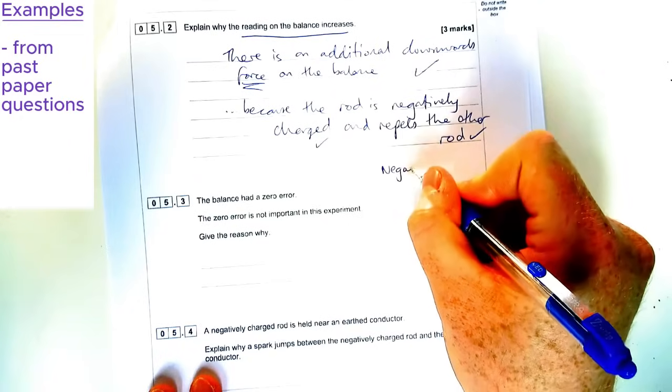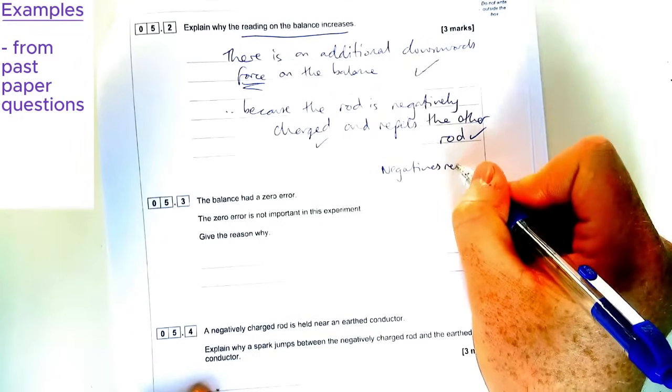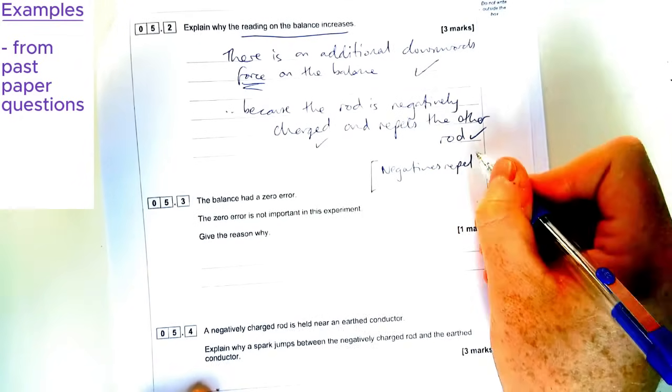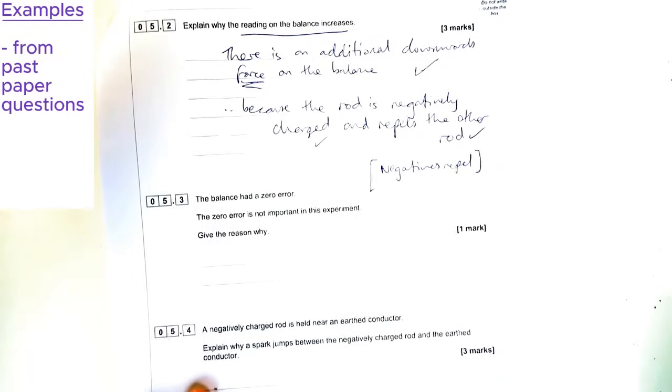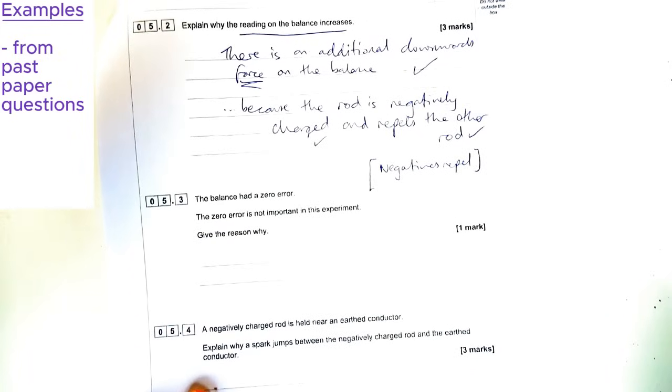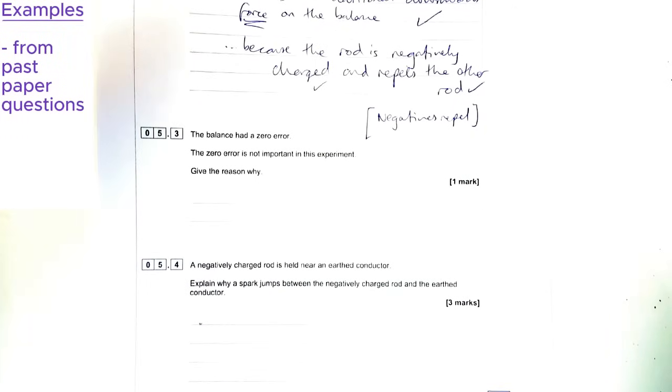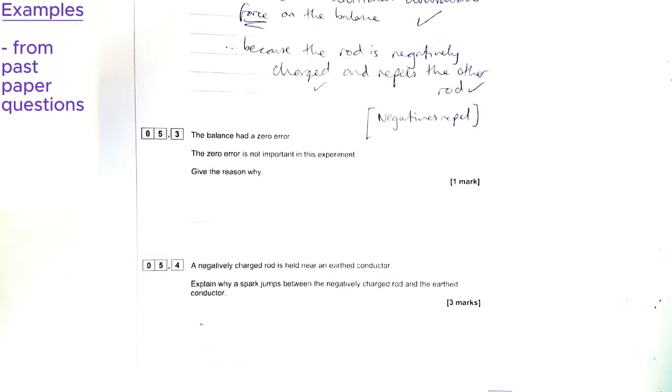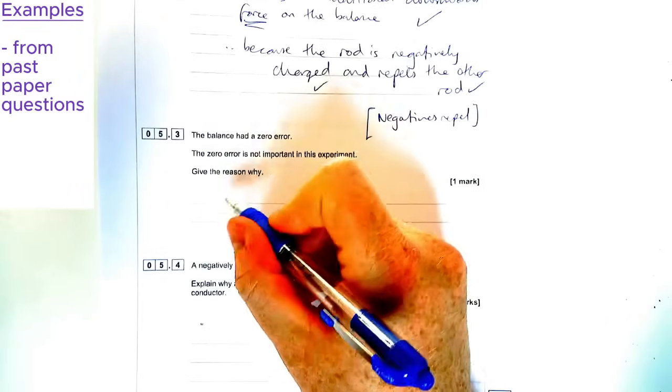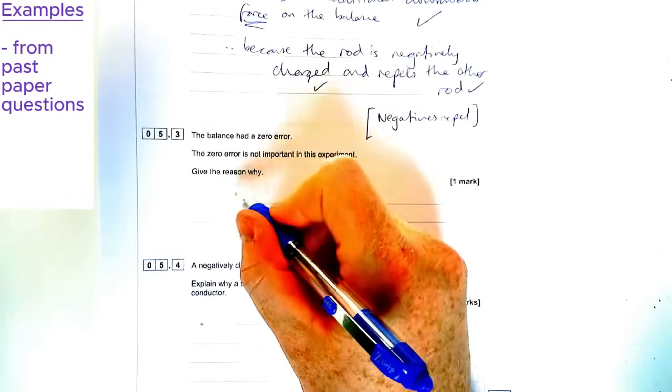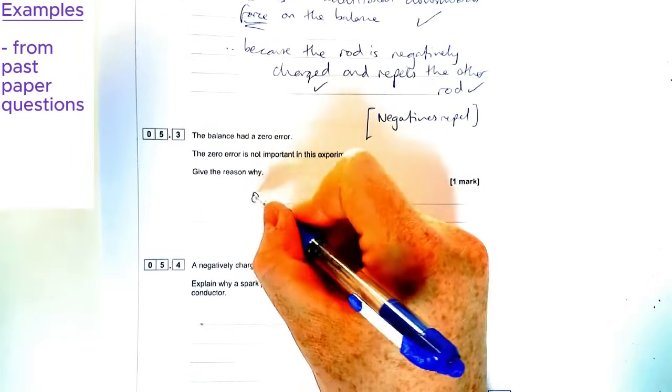Right, I'm going to finish off this question, because I think it's a little bit tricky as well. There's a good chance to just revise a couple of key things with static electricity. So the question talks about a zero error, which is not important. Zero error would only be important if you were measuring an absolute value. The reason why it's not important here is because only the change in reading is being measured, not the absolute value or the actual value itself.